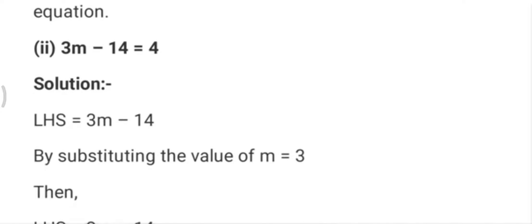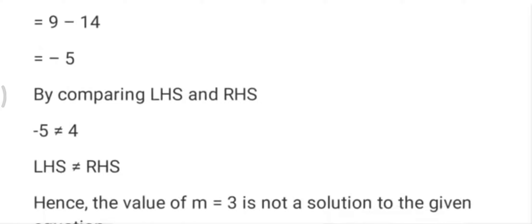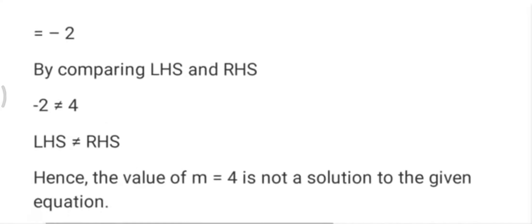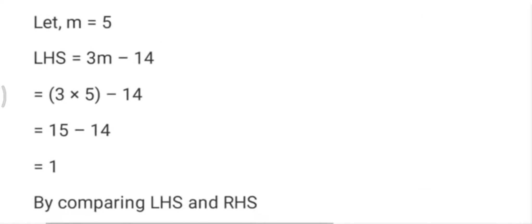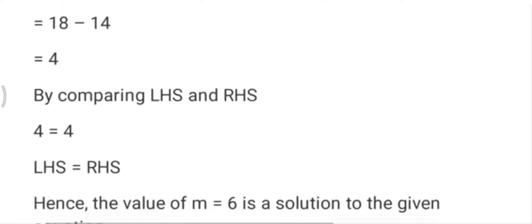In the second part, 3m-14=4. We try values one by one: putting m=4 gives 3*4-14=-2 (no); m=5 gives 1 (no); m=6 gives 3*6-14=4. The right-hand side is also 4, so m=6 satisfies the equation and is the solution.